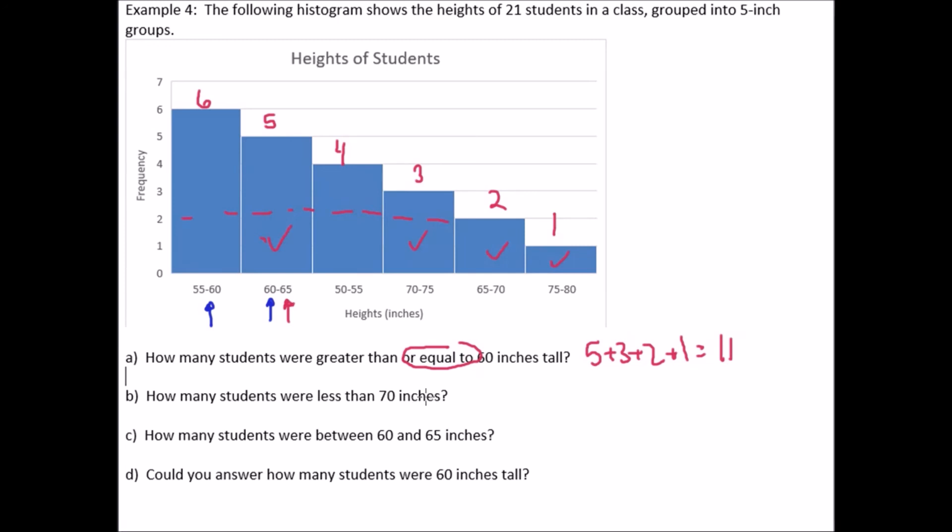So greater than or equal to 60 inches tall. Let's actually just redo that one. 60 inches tall. We'll do five, three, two, and one. Five, three, two, and one. That gives us 11. So less than 70 inches. 70 inches. So 55 to 60. Yep. So let's write down six. 60 to 65. Yep. 50 to 55. 70 to 75. Nope. 65 to 70. Yes. And then 75 to 80. No.